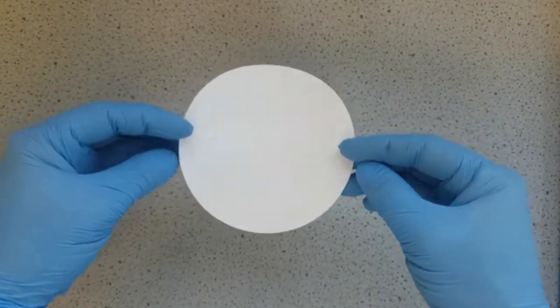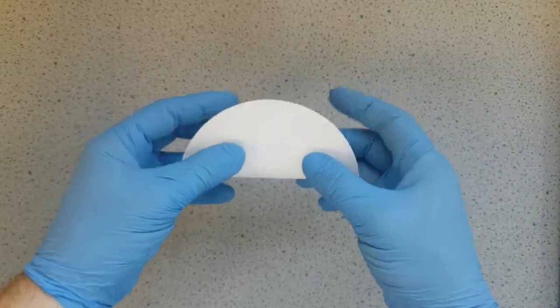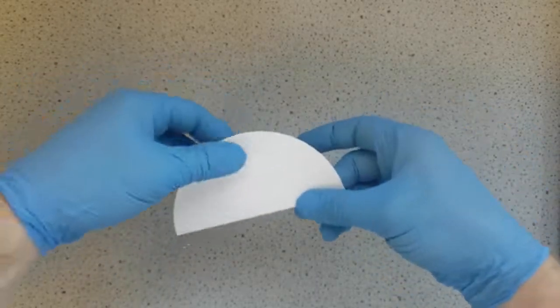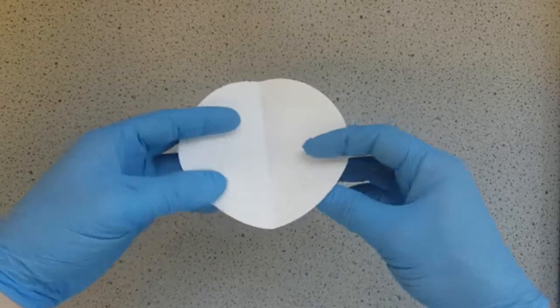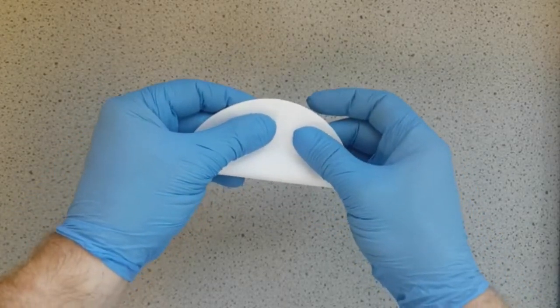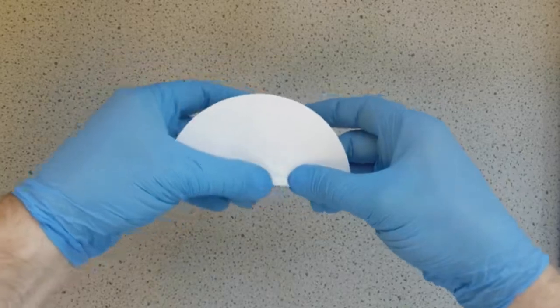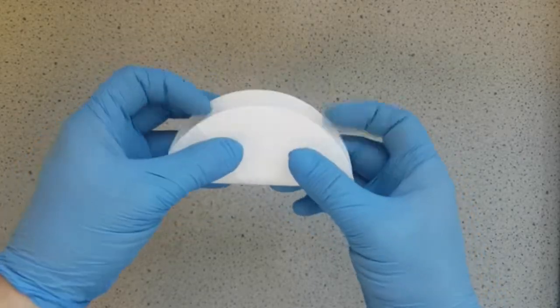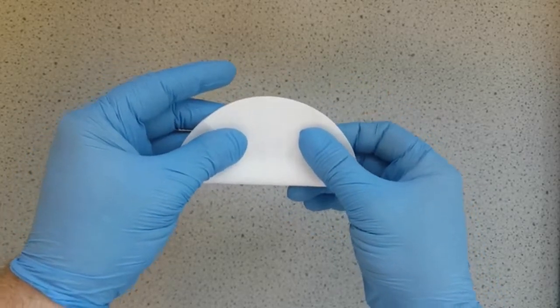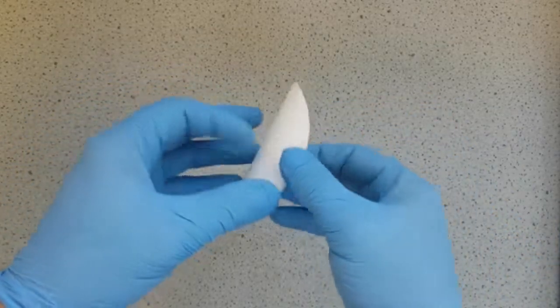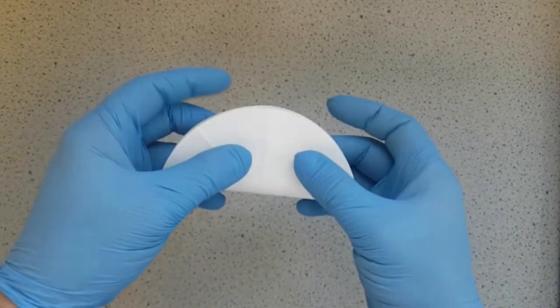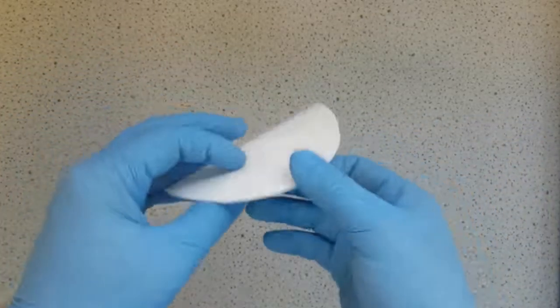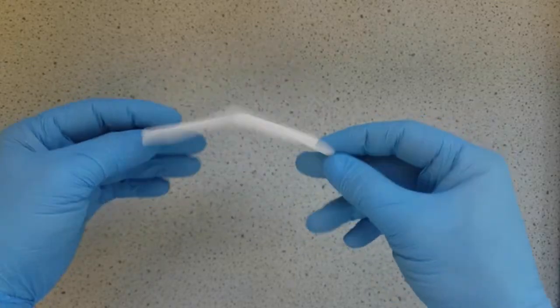So using a round sheet of filter paper we are going to fold first in half, like so, and then fold again in half to make four quadrants. We'll then repeat this twice again to create eight equal segments.